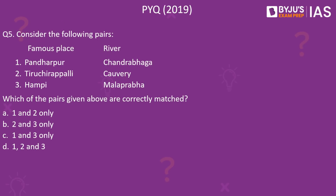Moving on to the last question of the day — a question from the 2019 UPSC prelims GS Paper 1. Consider the following pairs of famous place and associated river: Pandharpur–Chandrabhaga, Tiruchirapalli–Kaveri, and Hampi–Malaprabha. Which of the pairs are correctly matched? All three places — Pandharpur, Tiruchirapalli, and Hampi — are well-known for their temples: the Lord Vittal Rukmini Mandir, Sri Ranganatha Swami temple, and the Virupaksha temple respectively. Pandharpur is in Maharashtra, Tiruchirapalli in Tamil Nadu, and Hampi in Karnataka.